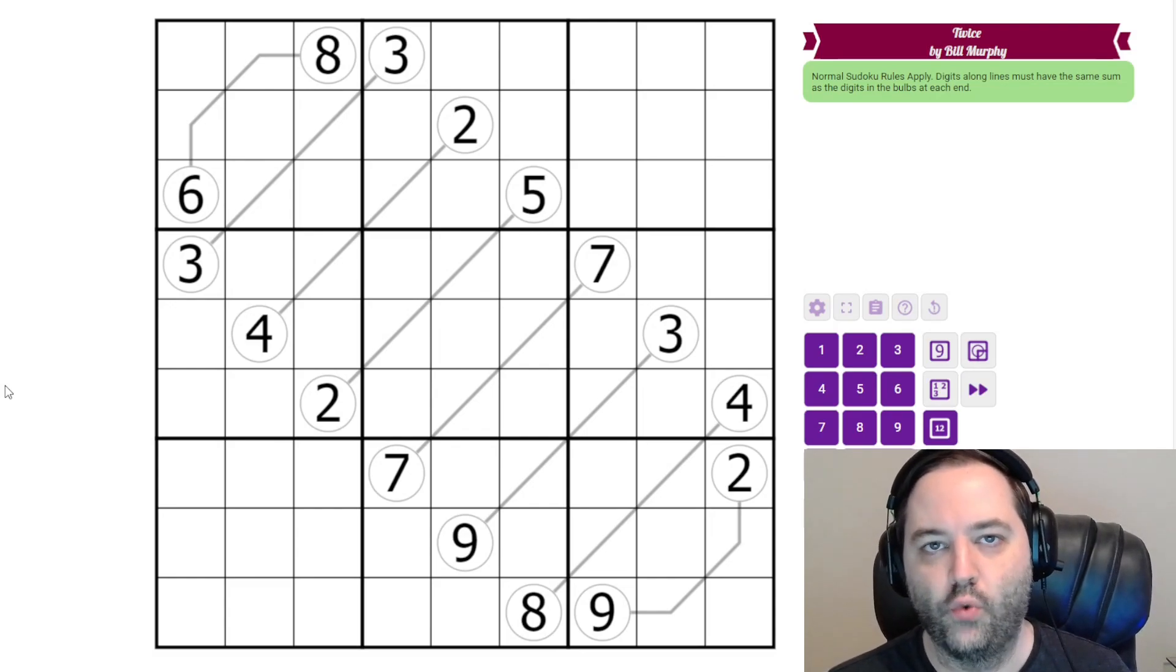Hi everyone, this is a walkthrough for TWICE by Bill Murphy. This was the puzzle for February 6th, 2024 and this is a double arrow Sudoku.